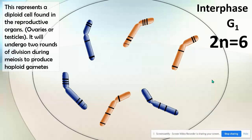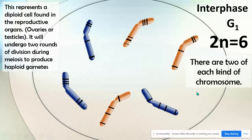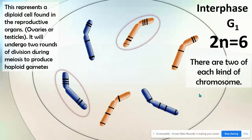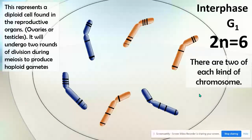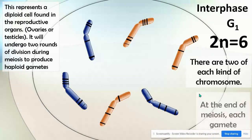So in this cell, there are two of each kind of chromosome. I've highlighted them for you — you can tell I tried to match the lines to show different genes and homologous chromosomes. So we have two of every kind of chromosome.